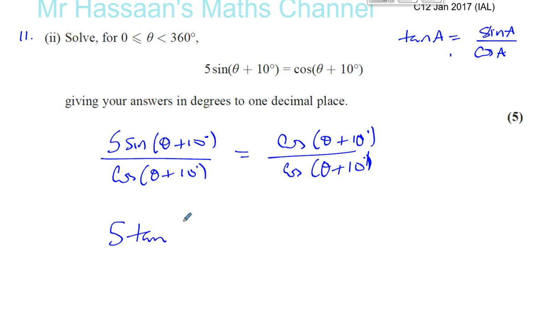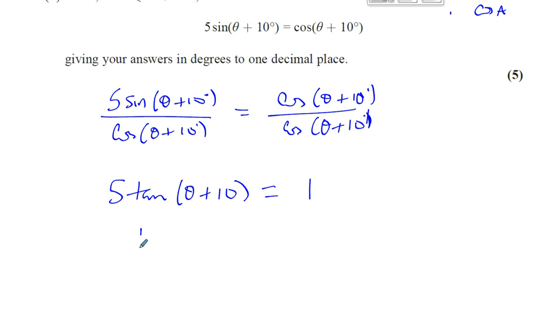Now 5 sine of an angle divided by cosine of an angle becomes 5 tan of that same angle. So 5 tan of theta plus 10 equals 1. Something divided by itself is always 1. Now I'm going to have tangent of theta plus 10 equals 1 fifth. And now I can solve this equation.